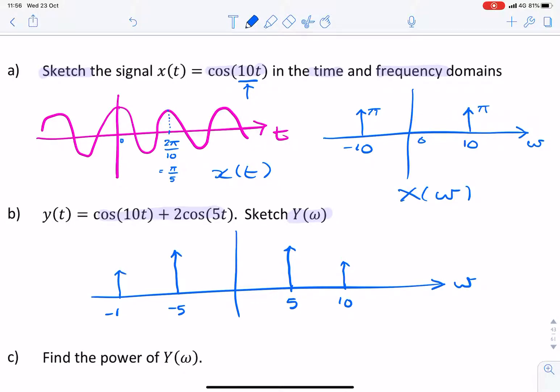So, this would be 2π, and that would be π, 2π, and π. Okay.